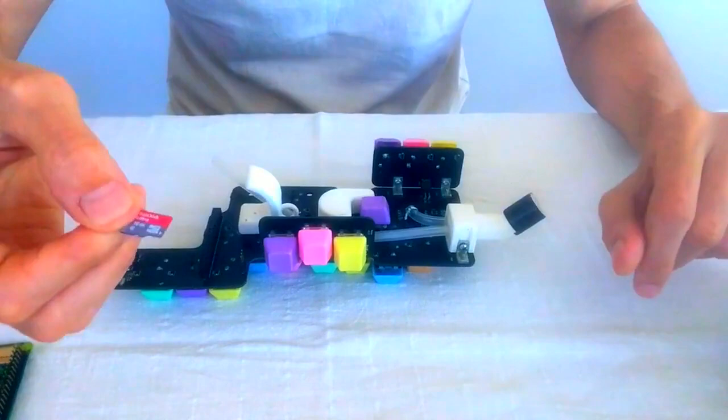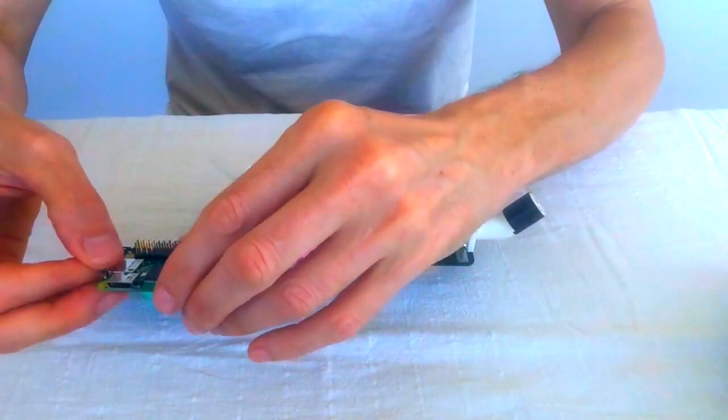First the SD card with software on it. You can download the image from the campaign page and then put it on the Raspberry Pi.